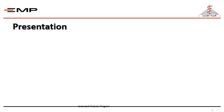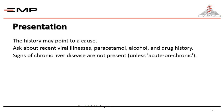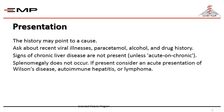Patients with acute liver failure should be promptly managed. History may point to a cause — ask about recent viral illnesses, paracetamol, alcohol, and drug history. Signs of chronic liver disease are not present unless it is acute liver failure on top of chronic liver disease. Splenomegaly does not occur; if present, consider Wilson's disease, autoimmune hepatitis, or lymphoma.